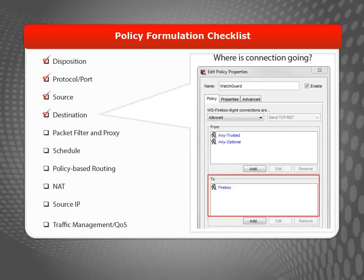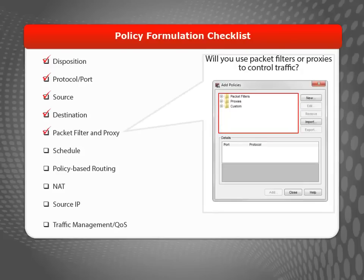The destination is the other end of the connection you're trying to control. When you configure a policy to control traffic between a source and a destination, it's important to understand that the policy handles both the request and the response. For example, a policy that allows a connection from a client on your network to an external web server also allows the response to that connection — you don't need to create a separate policy for that return response. If you're using static NAT or the firewall's server load balancing capabilities, you'll be able to configure that with the destination.